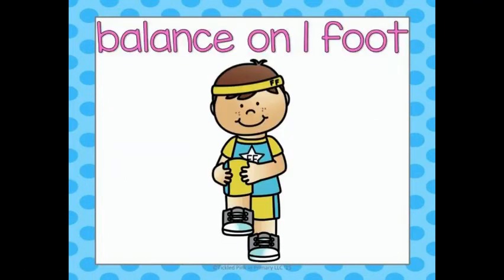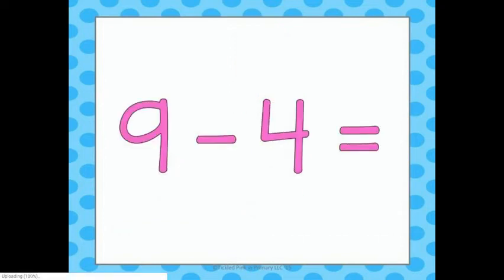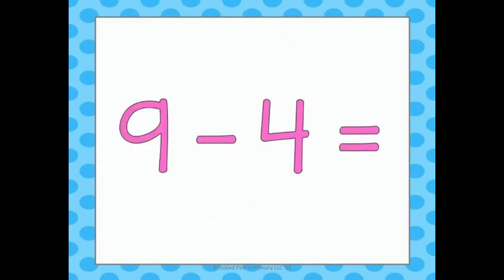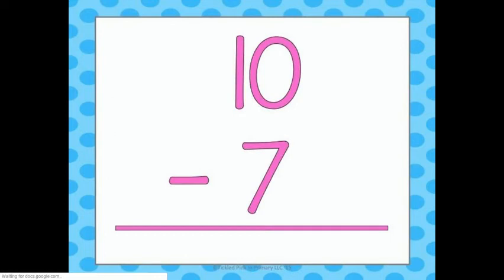Balance on one foot. 18 plus 2 equals 20. 9 minus 4 equals 5. 13 plus 5 equals 18. 10 minus 7 equals... 14.